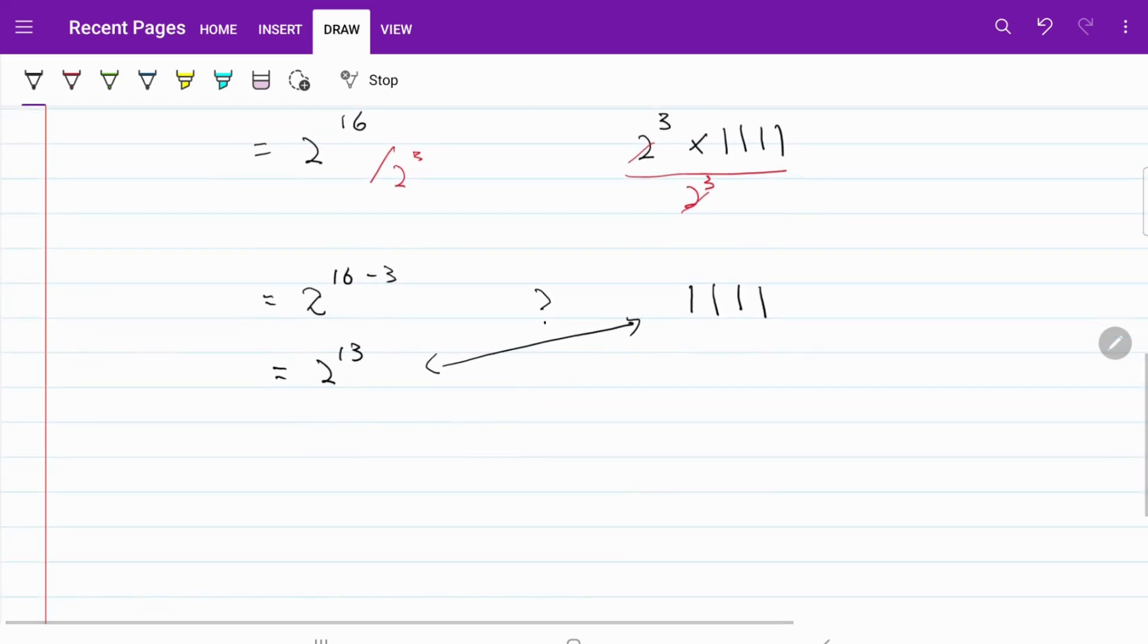If I work out 2 to the power of 13, I can write that as 2 to the power of 10 multiplied by 2 to the power of 3. Meaning the left-hand side will be equal to 1024 multiplied by 8, which is equal to 8192. So if we compare 8192 with 1,111, obviously it favors the left-hand side.